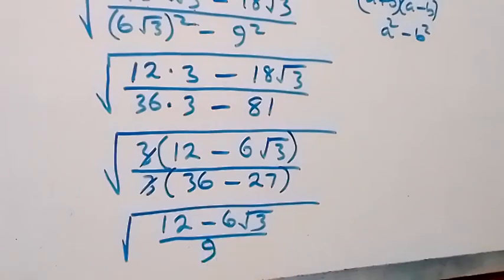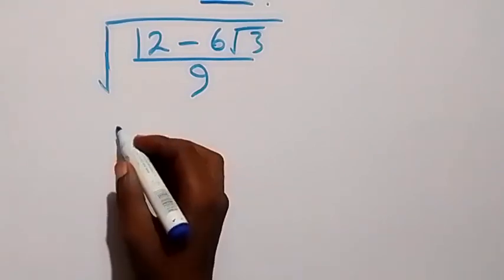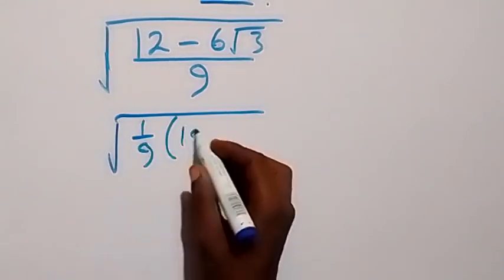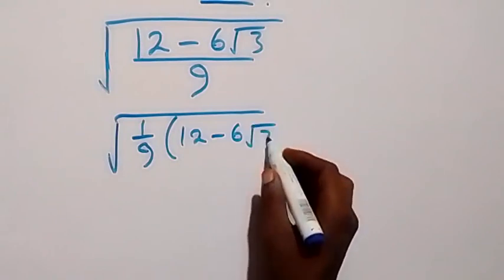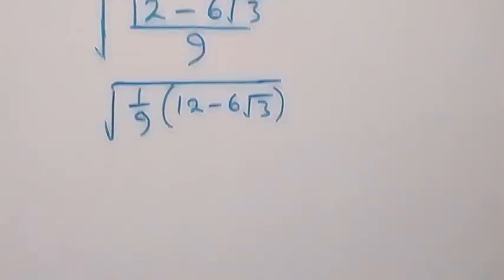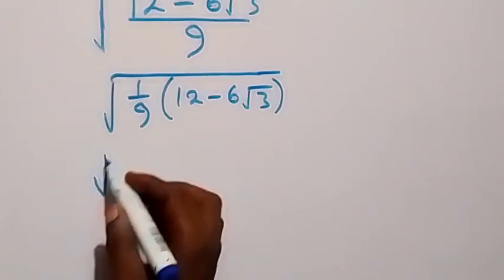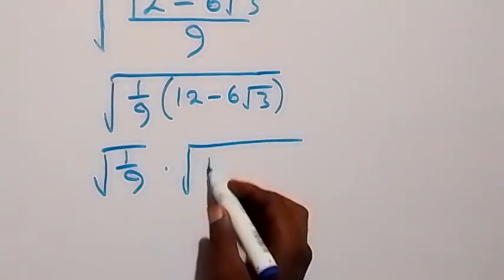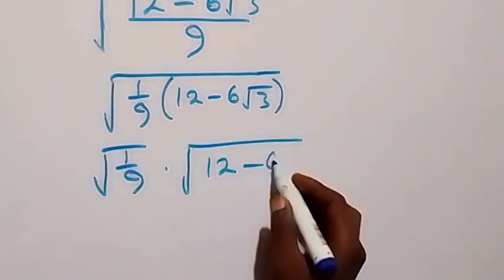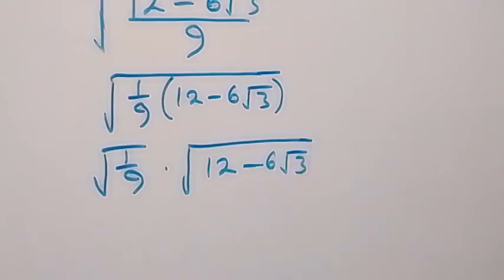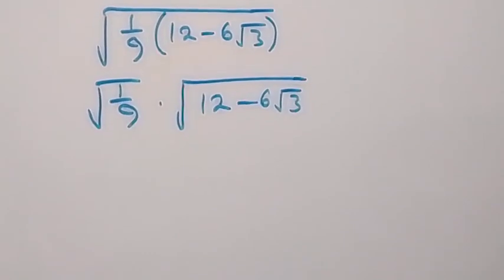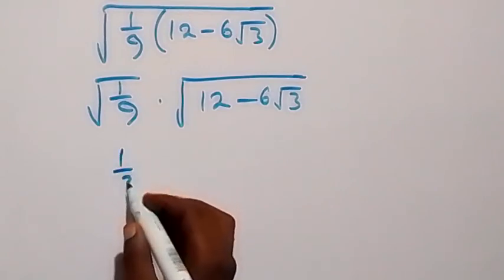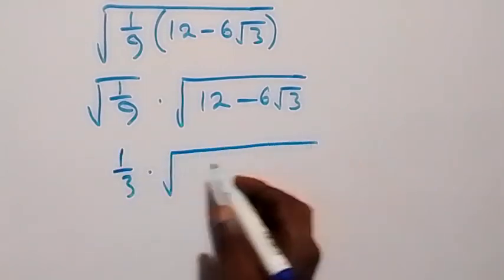We can also write this as square root of 1 over 9 multiplied by 12 minus 6 root 3. From here we can separate this into two square roots: square root of 1 over 9, then multiplied by square root of 12 minus 6 root 3. In the next step, square root of 1 over 9 is also 1 over 3.